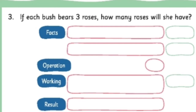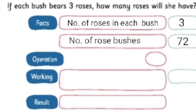Third question. If each bush bears 3 roses, how many roses will she have? That is, there are 3 roses in each bush. How many roses will she have in total? Let's write the facts first. Number of roses in each bush — 3. Number of rose bushes — we take the answer from the last question — there are 72 rose bushes. So here, write 72.